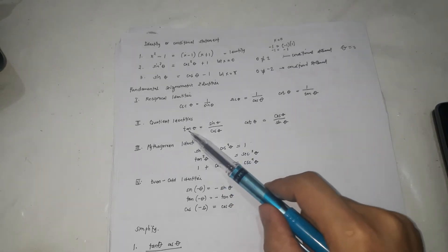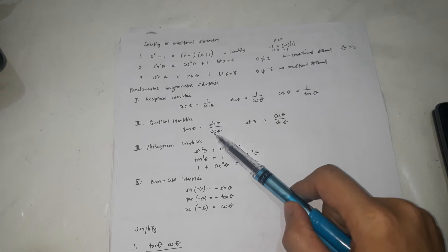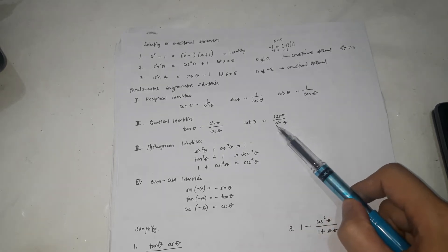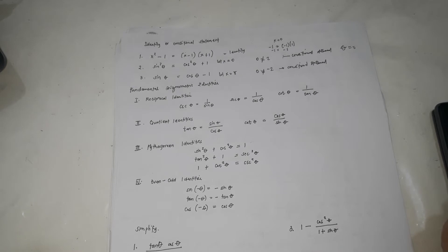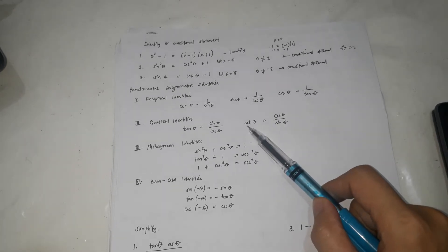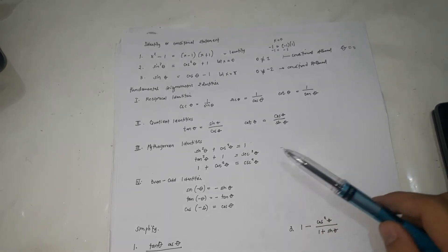Quotient identities: tangent equals sine over cosine, and cotangent equals cosine over sine. A way to remember — if cosine comes first in the fraction, that's cotangent.